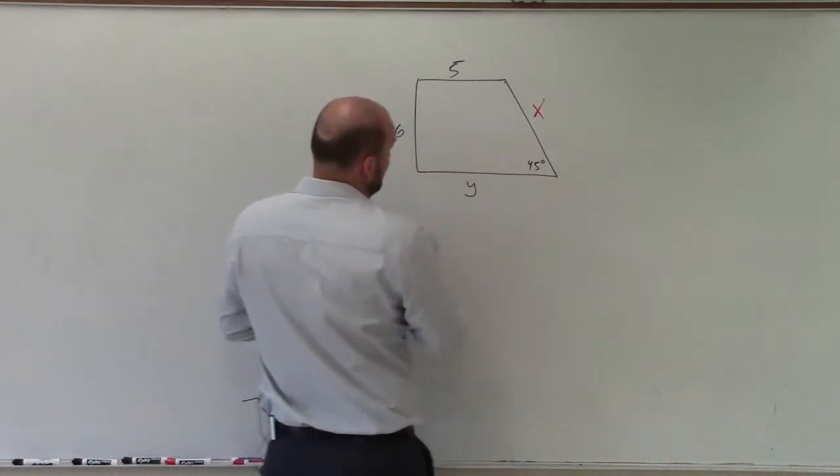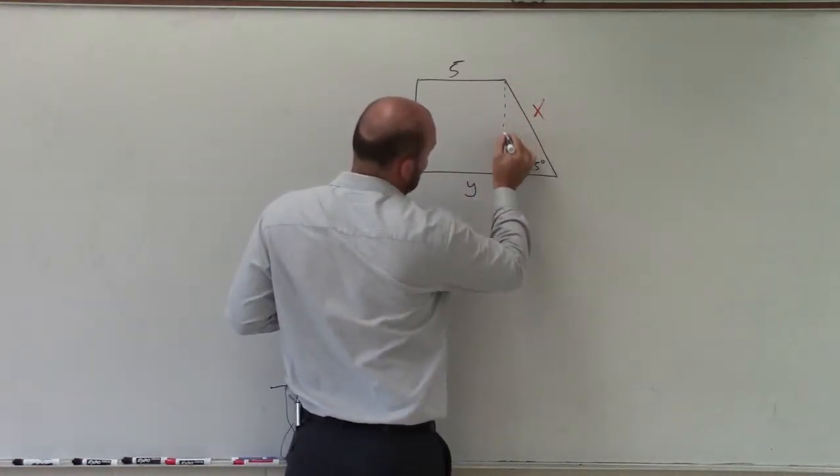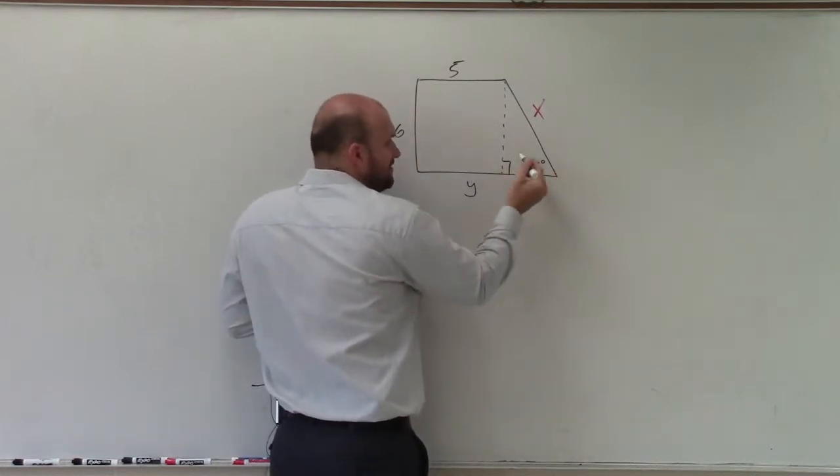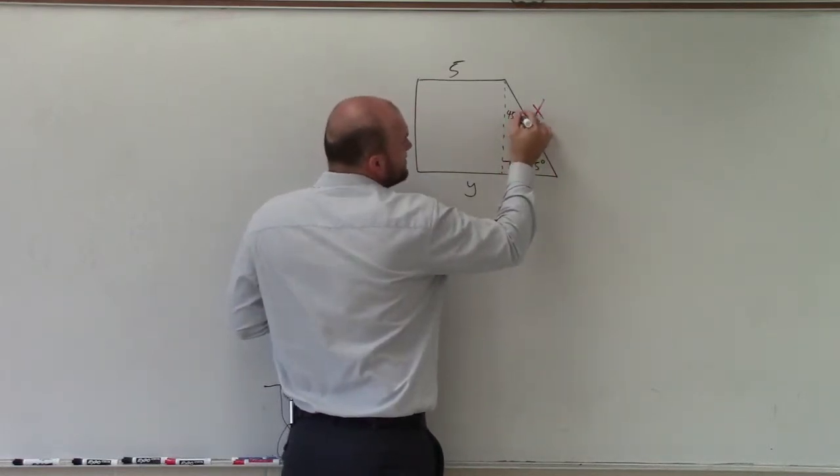So if I draw a perpendicular line straight down, I now have produced a 45-90. Therefore, this has to be 45 degrees.